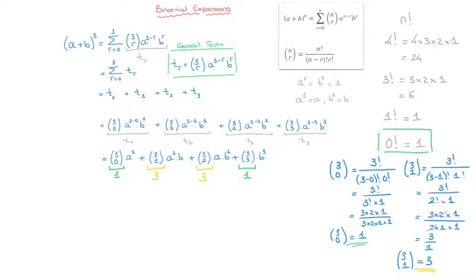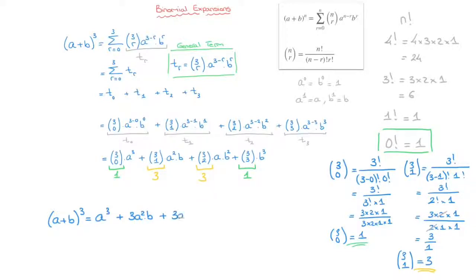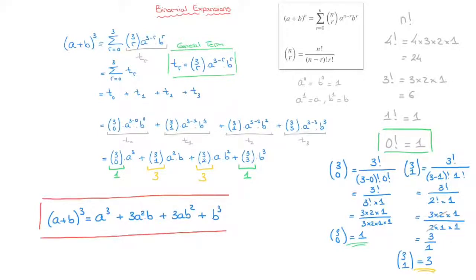We can now write our final answer. a plus b raised to the power of 3 equals 1 times a cubed, which is just a cubed, plus 3 times a squared times b, written as 3a squared b, plus 3 times a times b squared, written as 3ab squared, plus 1 times b cubed, which is just b cubed. That is our final answer — we've written all the terms in the expansion of a plus b raised to the power of 3 using the binomial expansions formula.